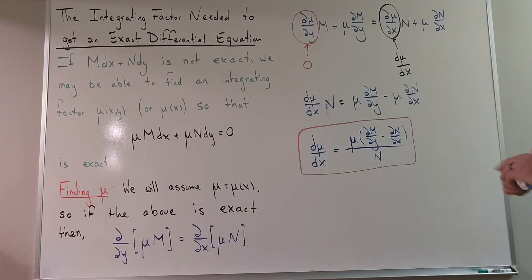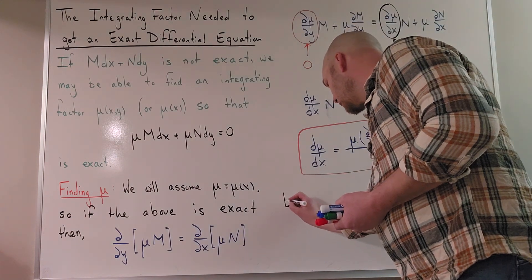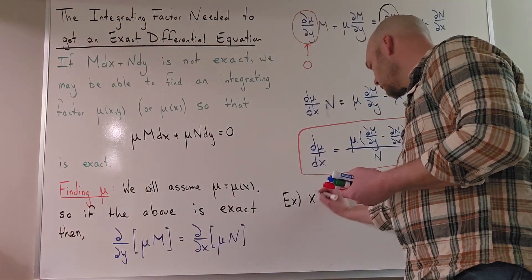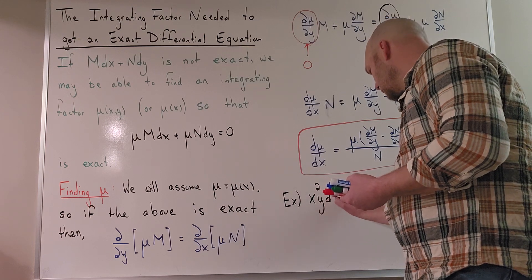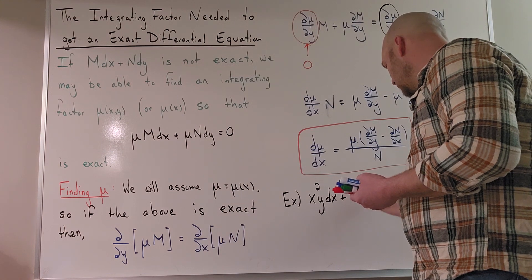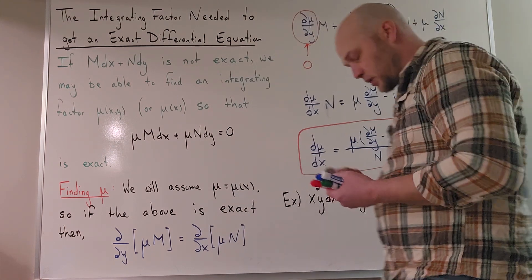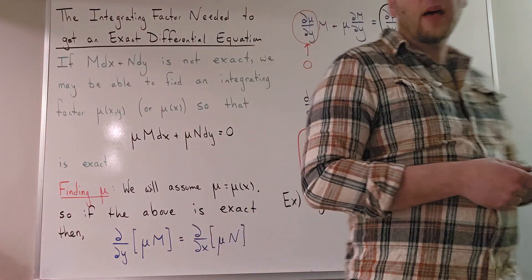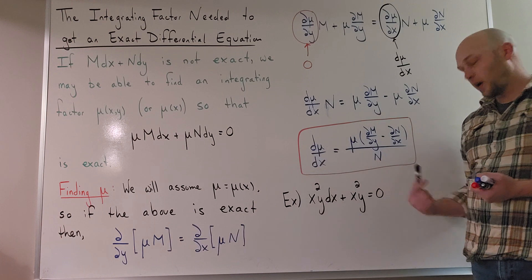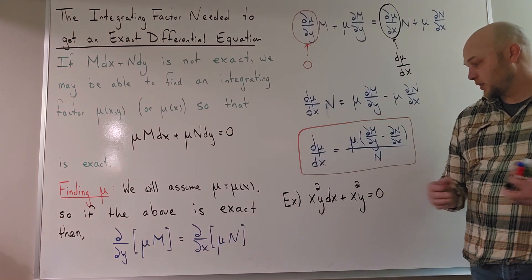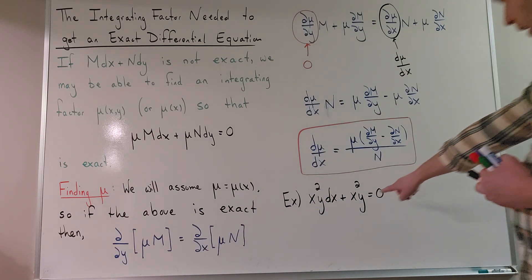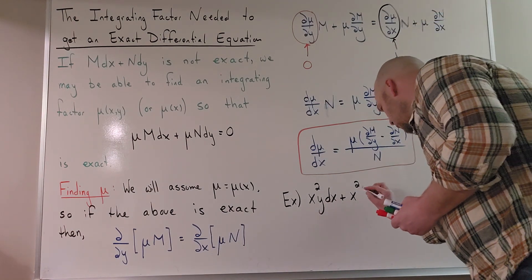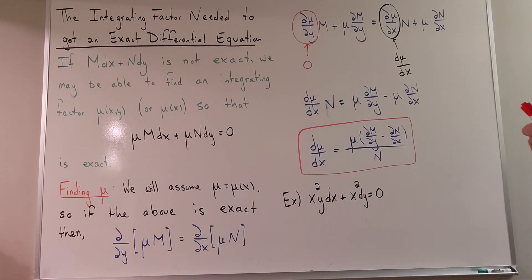Let's take a look at a specific example. I'm going to take the equation x²y dx plus x² dy equals zero. I want to do a couple of things: first, verify that it's not exact; then find the integrating factor; multiply through; and verify the resulting equation is exact. (Note: the second term should be x² dy.)